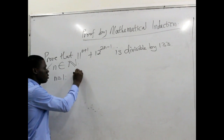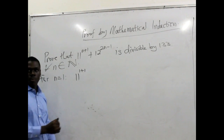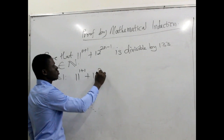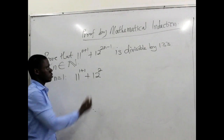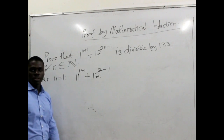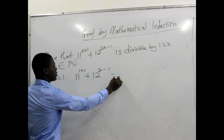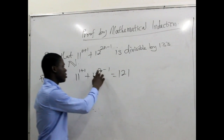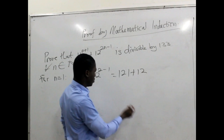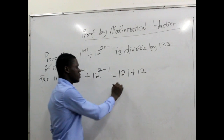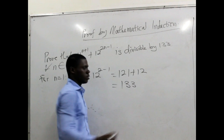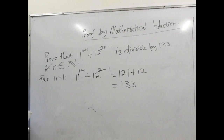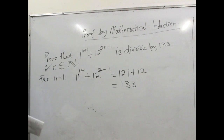In place of n we are writing 1. So n plus 1 gives us 2, and 1 multiplied by 2 gives 2. So here we are going to have 11 raised to the power of 2, which produces 121. Then plus 12, and 2 times 1 minus 1 gives 1, so plus 12 to the power 1 which is 12. So this actually gives us 133. It means that the statement is true for the first element of the set of natural numbers, and you can confirm it is divisible by 133.